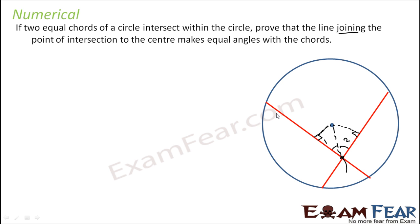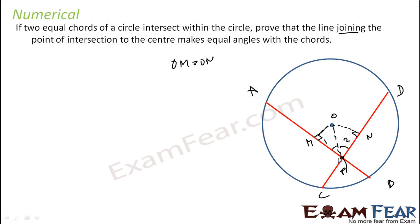AB and CD are equal. Let this be OM and ON, and let the intersection point be P. So OM will be equal to ON because AB is equal to CD. OP is equal to OP as a common side. So by RHS, these two triangles OMP and ONP are congruent.